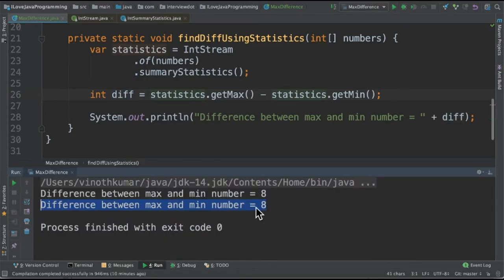When I run this program I'm able to get the results in the console. Both the methods print the same result. 9 minus 1 is 8.